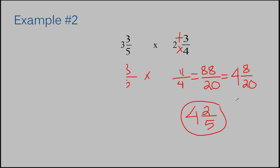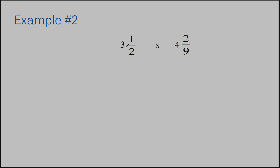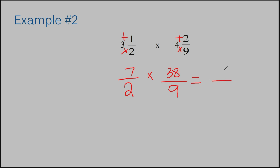Let's move on to example number two. I need to get improper fractions again, meaning I need to convert this. Two times three is six, six plus one is seven. My numerator is seven, my denominator is two. I need to multiply that by the improper fraction that I get over here. Nine times four is thirty-six, thirty-six plus two is thirty-eight. Thirty-eight is my numerator, nine is my denominator. Now it's time to multiply straight across. Seven times thirty-eight is two hundred sixty-six, and two times nine is eighteen.